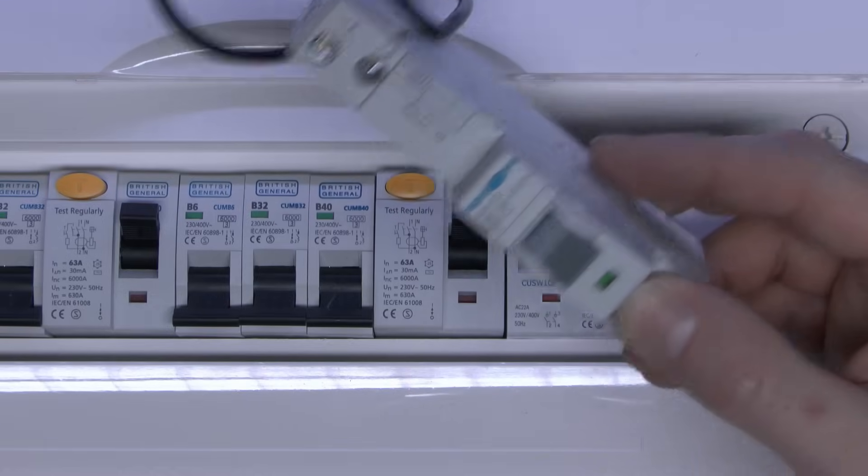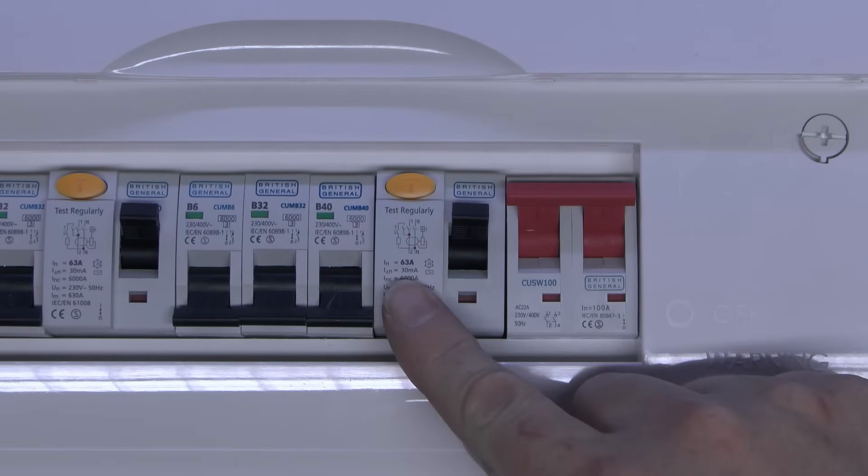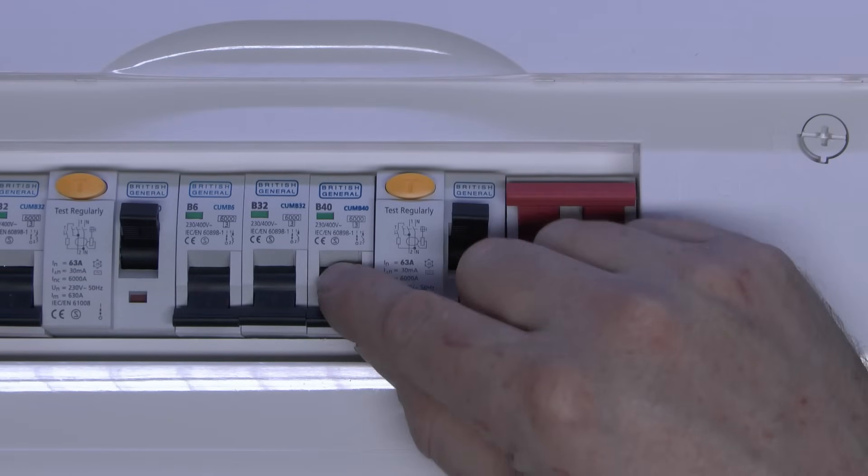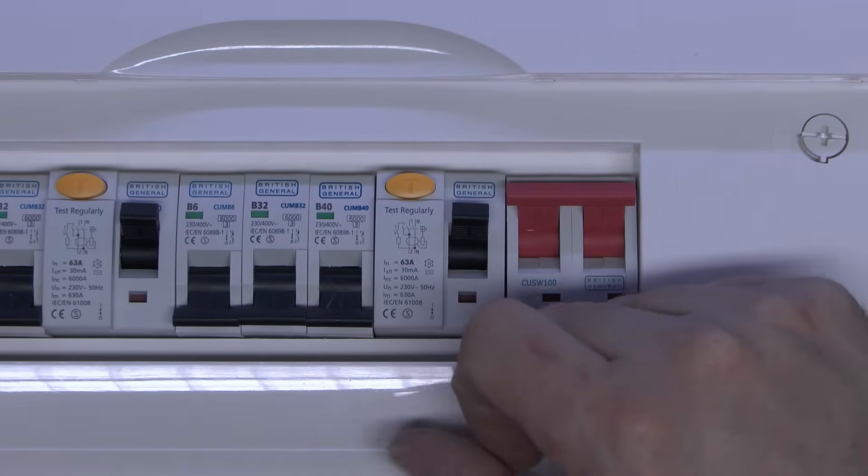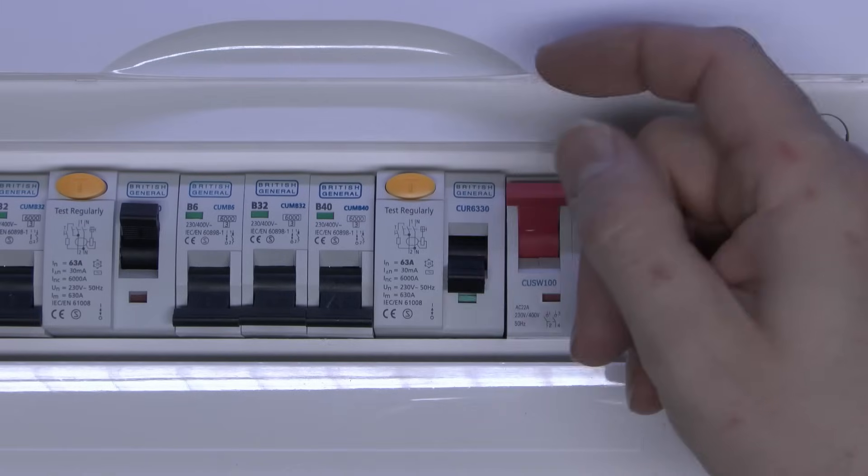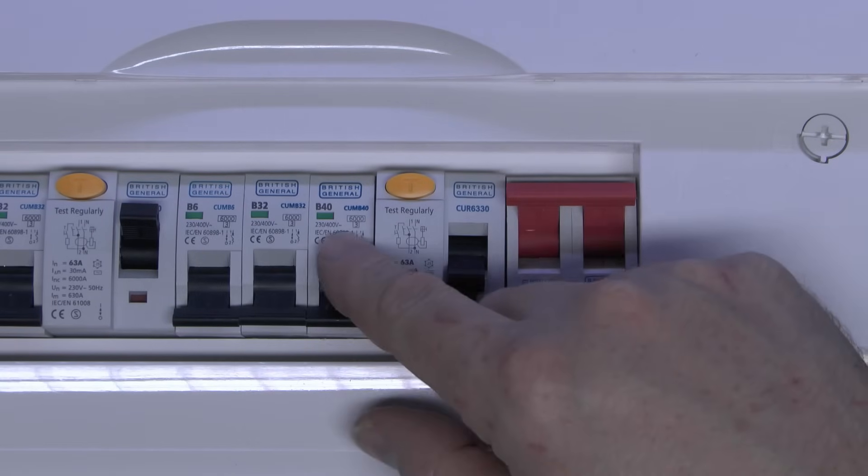So the RCBO here is essentially the RCD which in this case is a big two module device and a circuit breaker all combined into the same thing and the advantage then is that with this particular design if this RCD goes off then it's going to disconnect all three of these circuits.